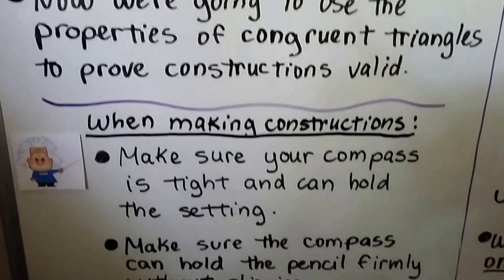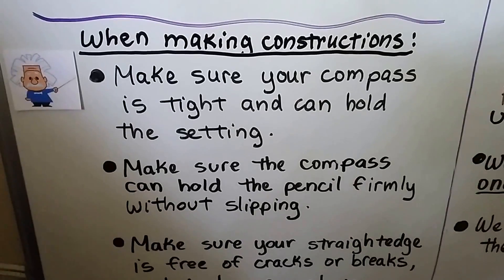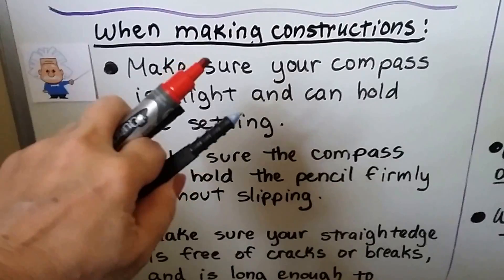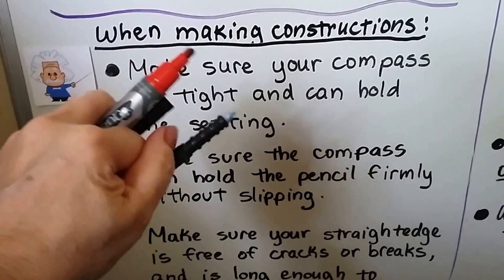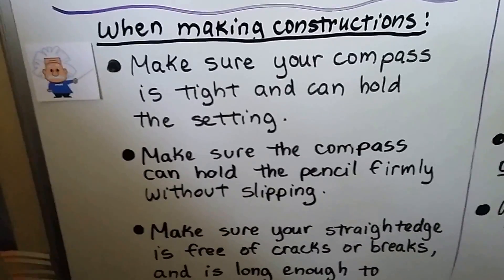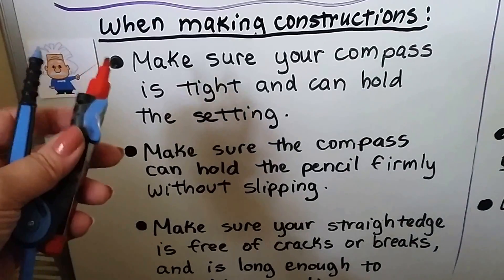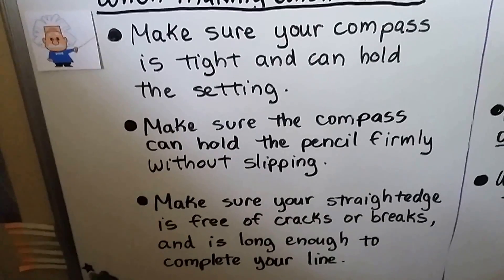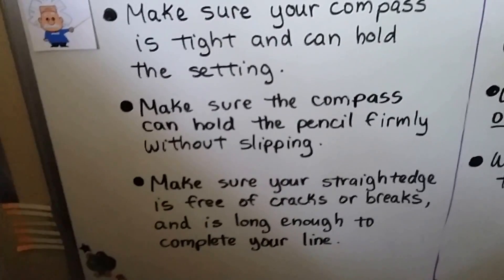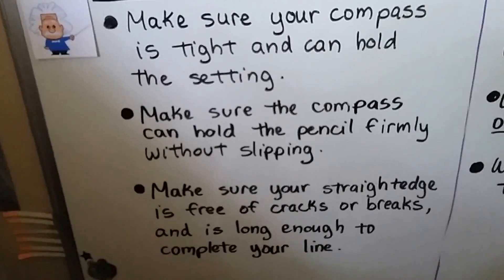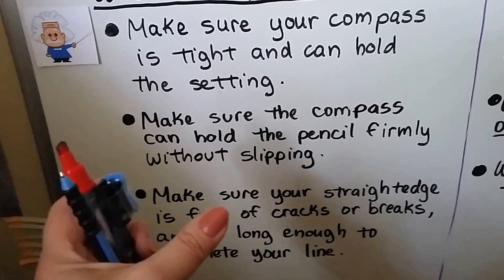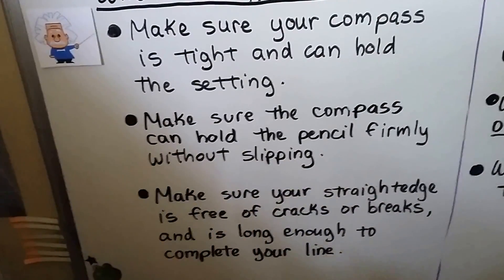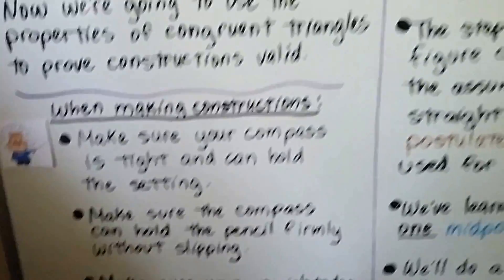When making constructions, make sure your compass is tight and can hold its setting — you don't want it loose and losing your measurement. Make sure the compass holds the pencil firmly without slipping, and that your straight edge is free of cracks or breaks and is long enough to complete your line. If a line needs to be 8 inches, most protractors are only 6 inches, so make sure your straight edge is long enough.